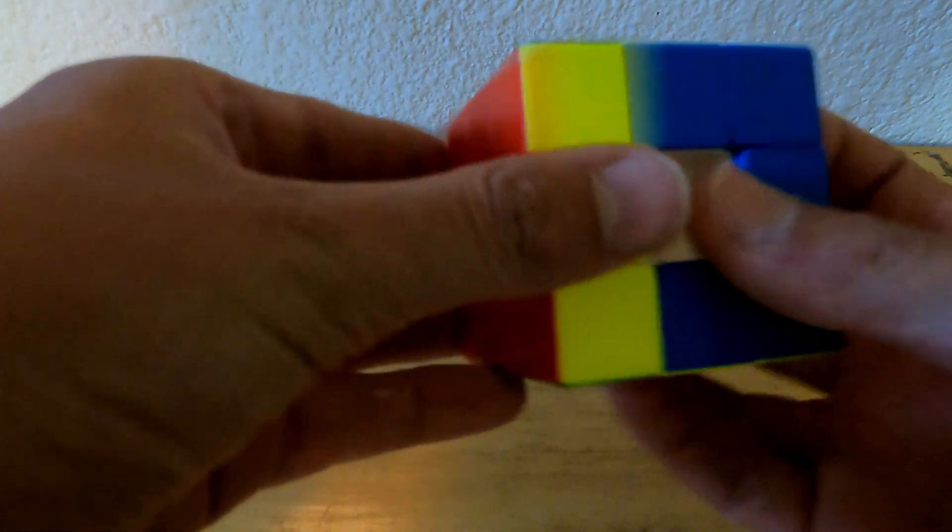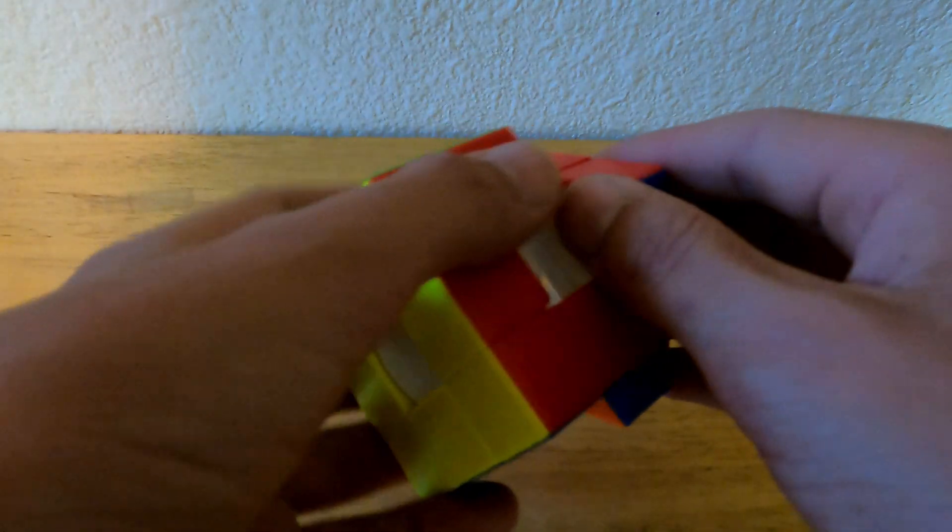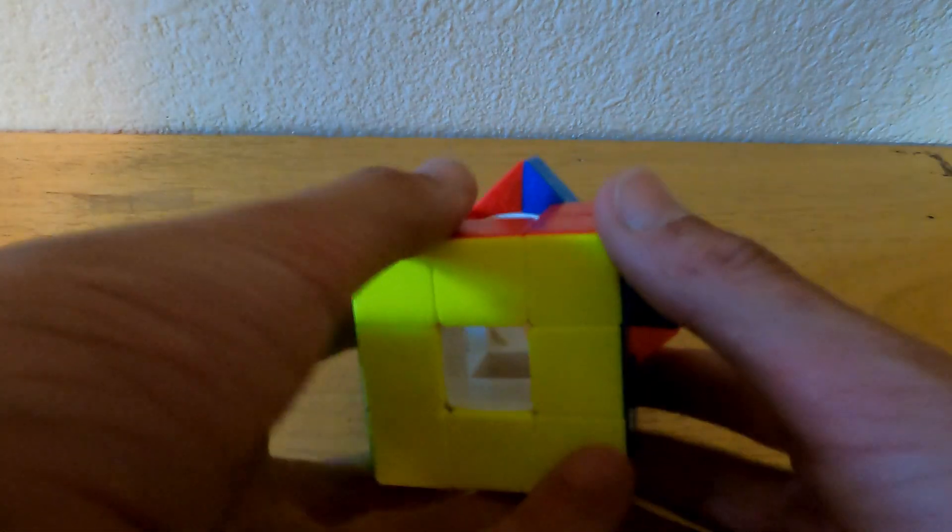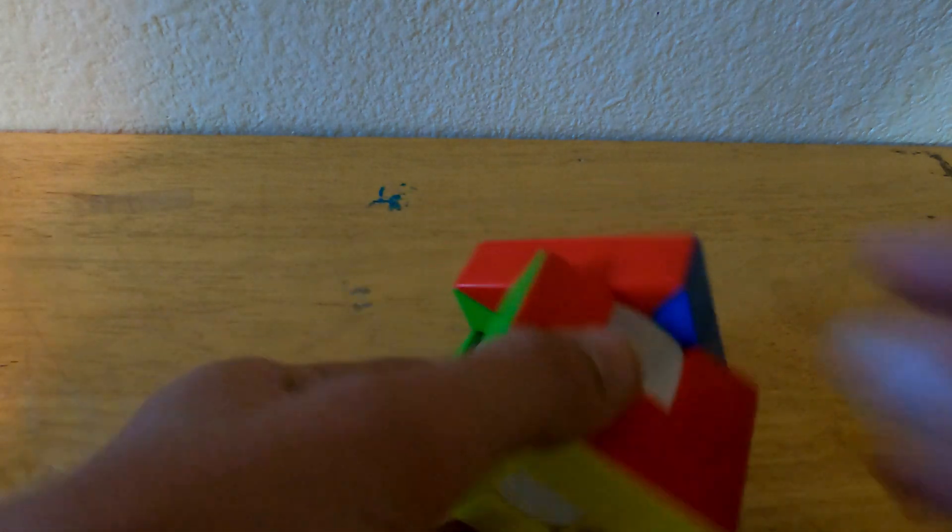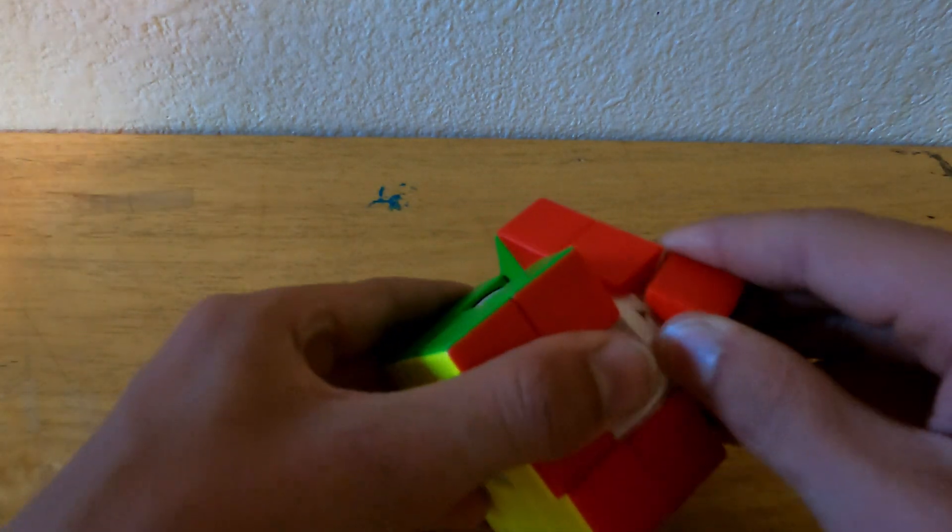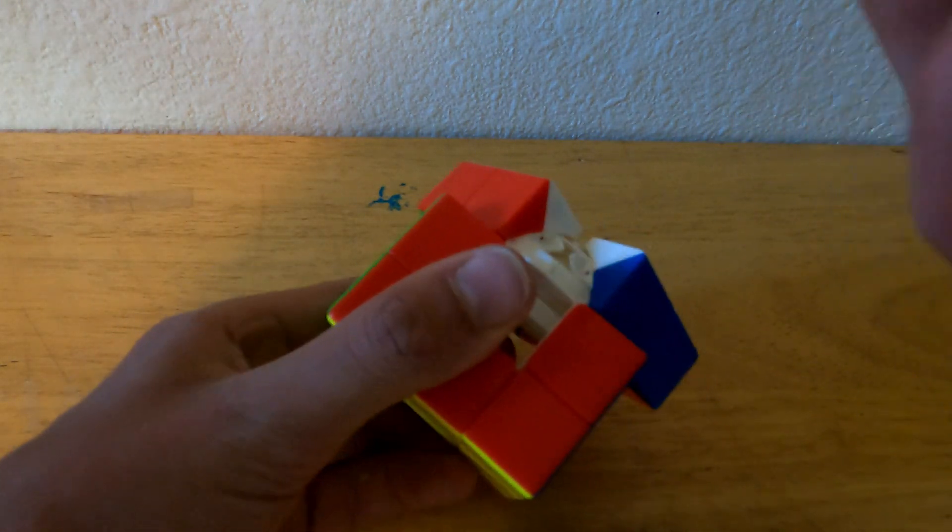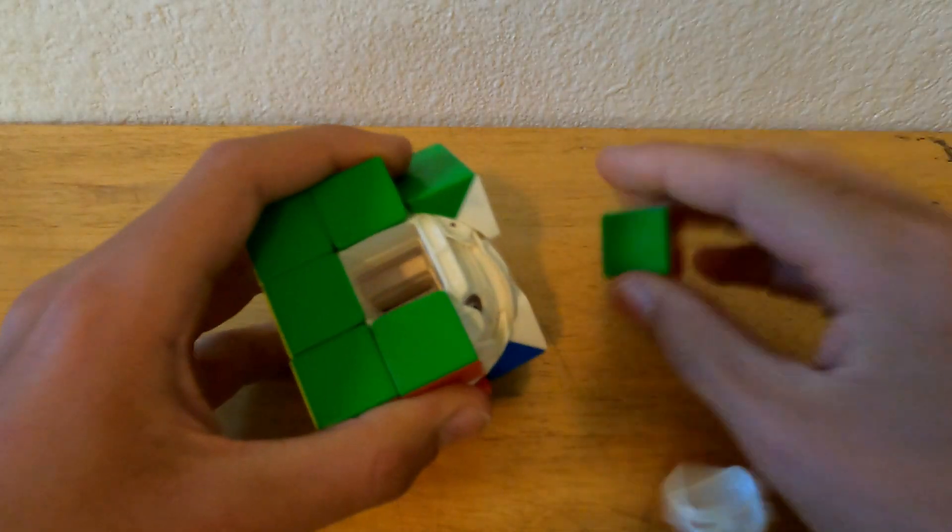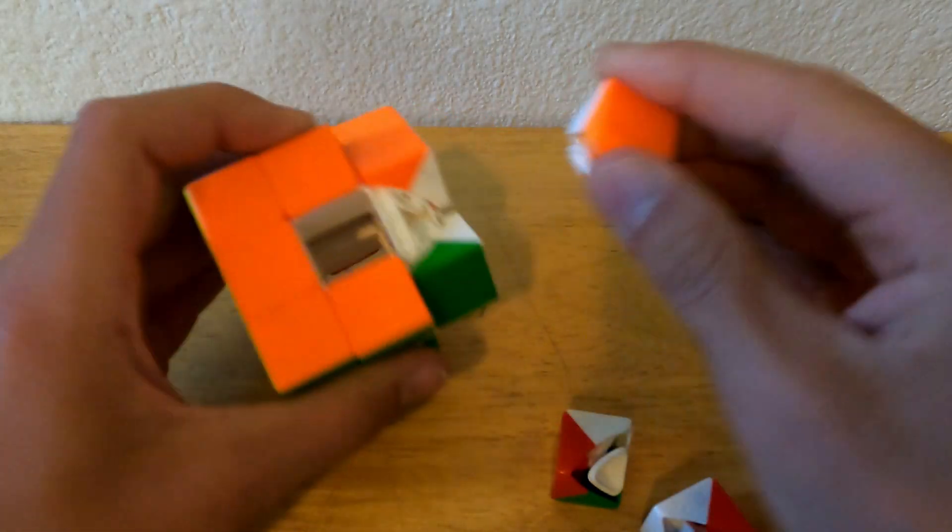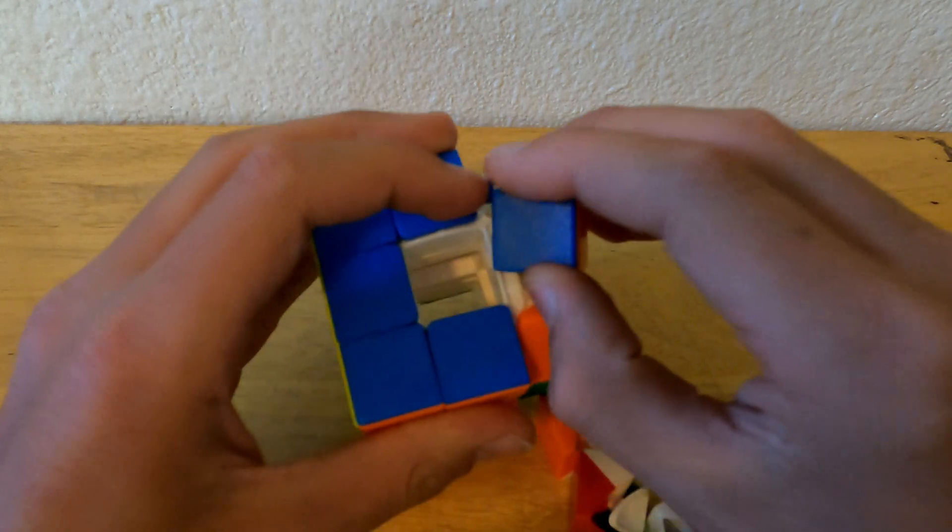All you have to do is turn the layer 45 degrees and then push up on this corner. And then you can twist it a little bit until it pops out. Now just do that with all the corners until you have removed every single one of the pieces.